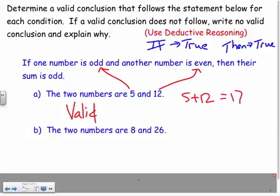What about this? The two numbers are 8 and 26. Well, 8 or 26, neither of them is odd, is it? They're both even, aren't they? Even, even. So I already know this isn't the case. So this is not valid, according to my if-then statement. Right? Because one number needs to be odd.